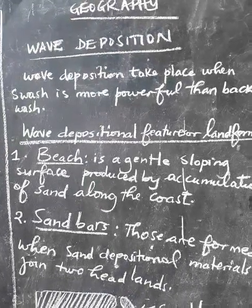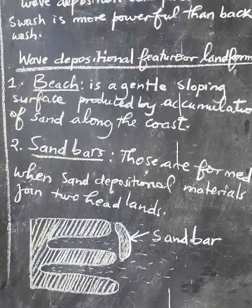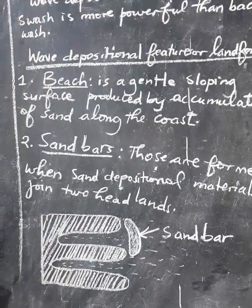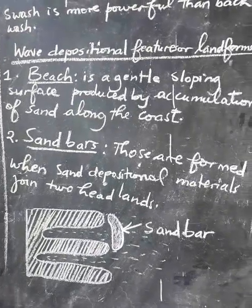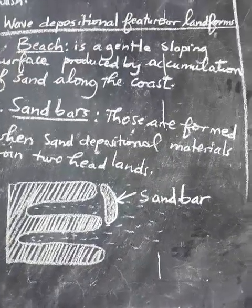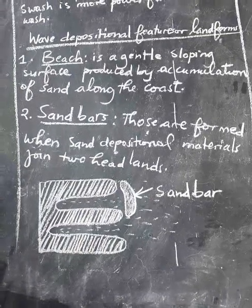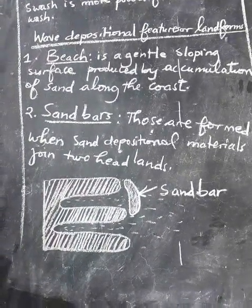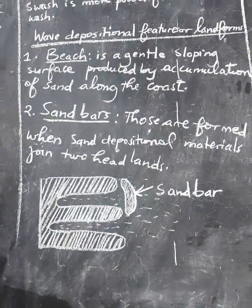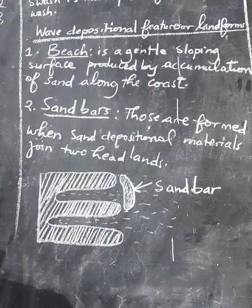Today we are going to see wave depositional landforms. Normally we have very many wave depositional landforms but today we are going to talk about the most important wave depositional features. The first depositional feature is a beach. A beach is a gentle sloping surface produced by accumulation of sand along the coast, where a wave deposits sand particles at the coast.